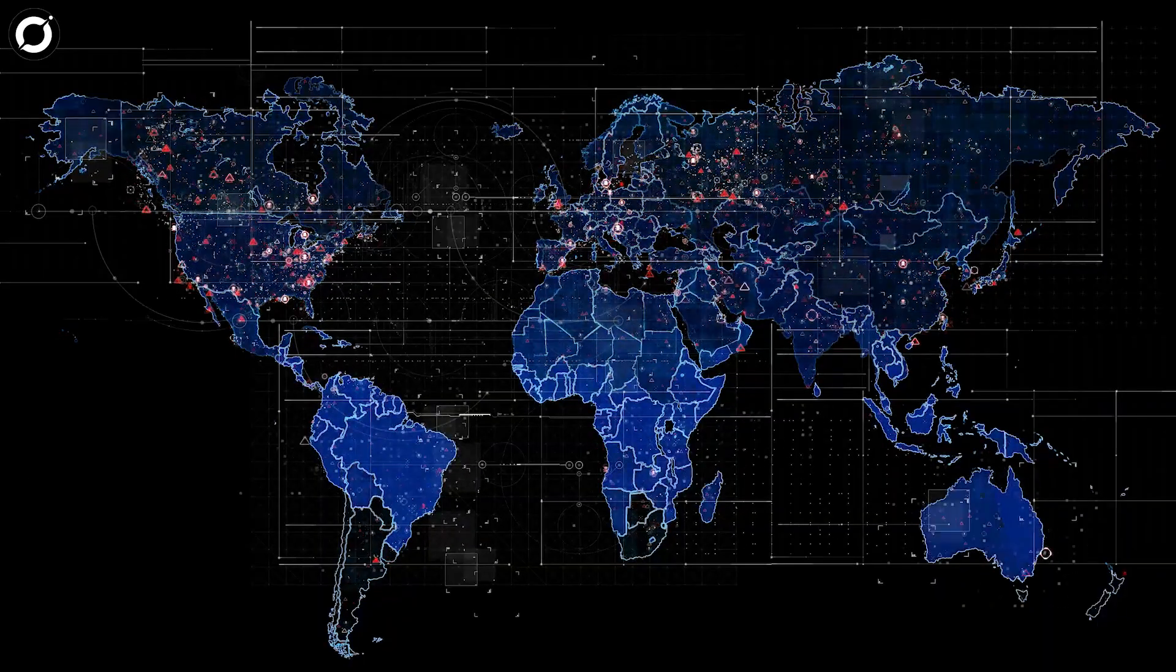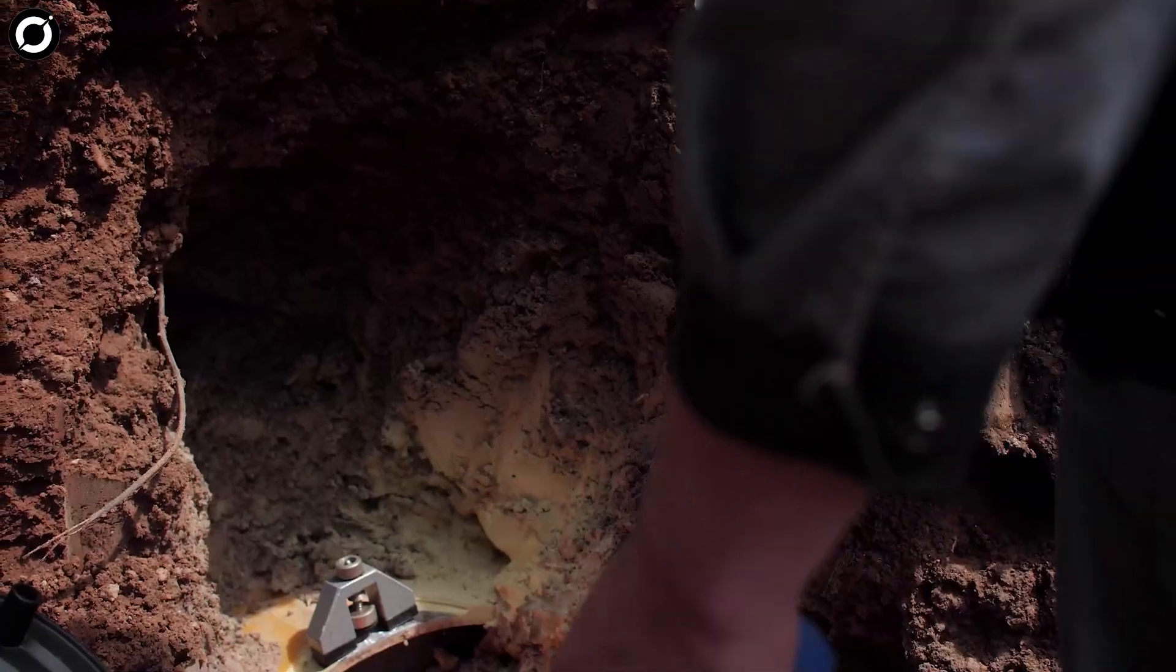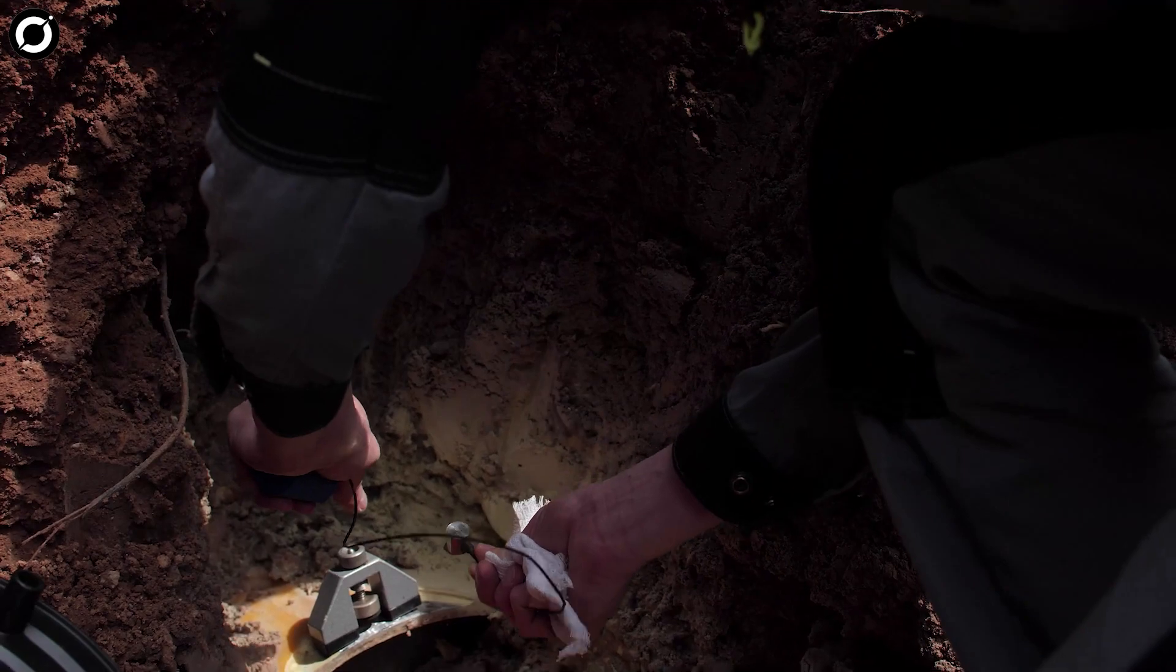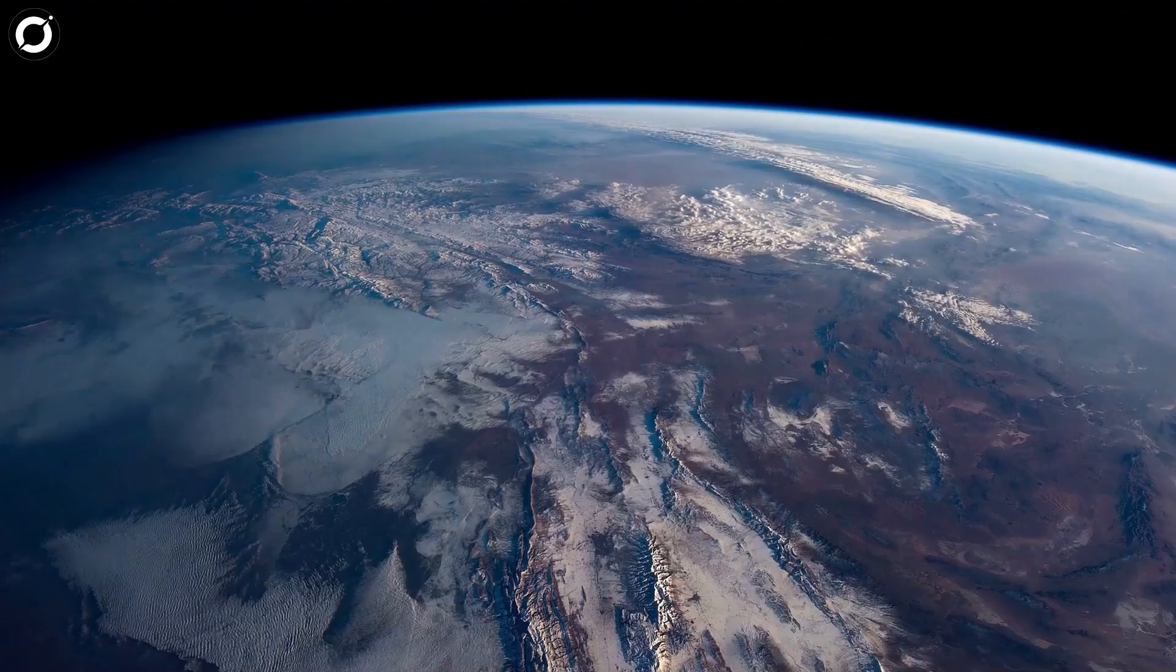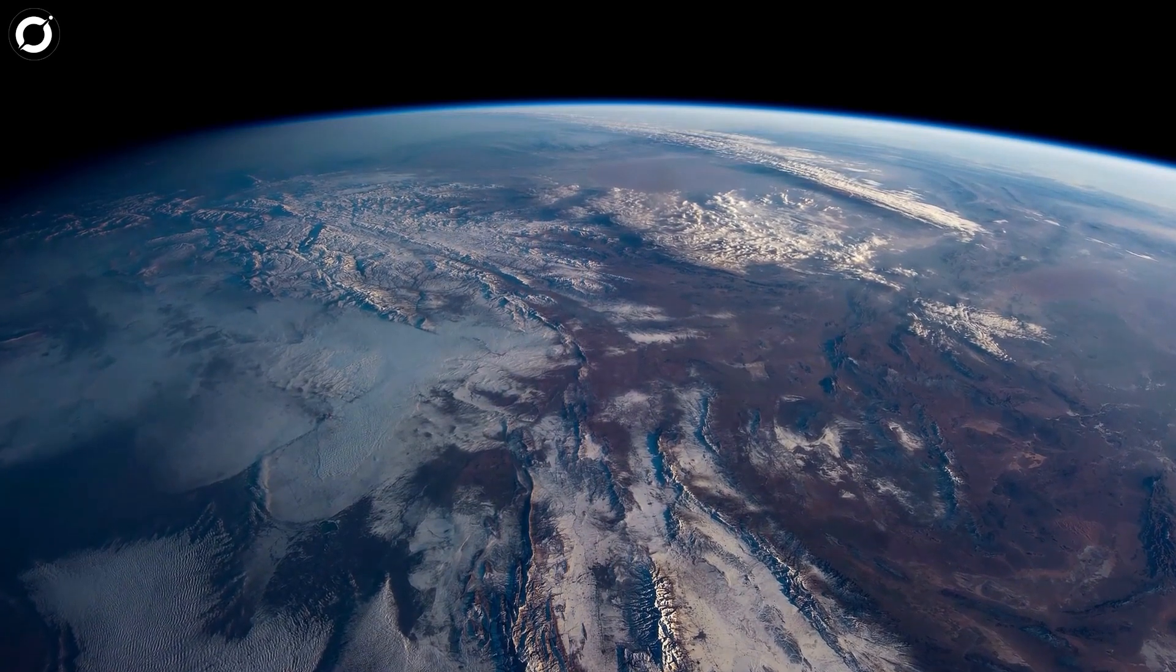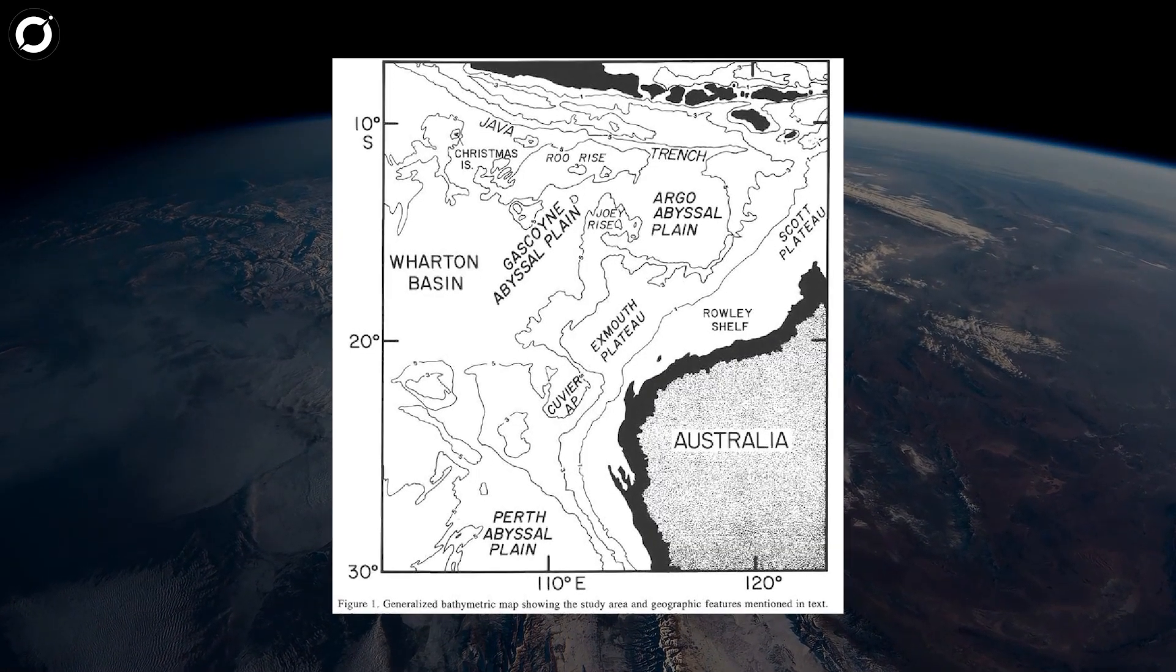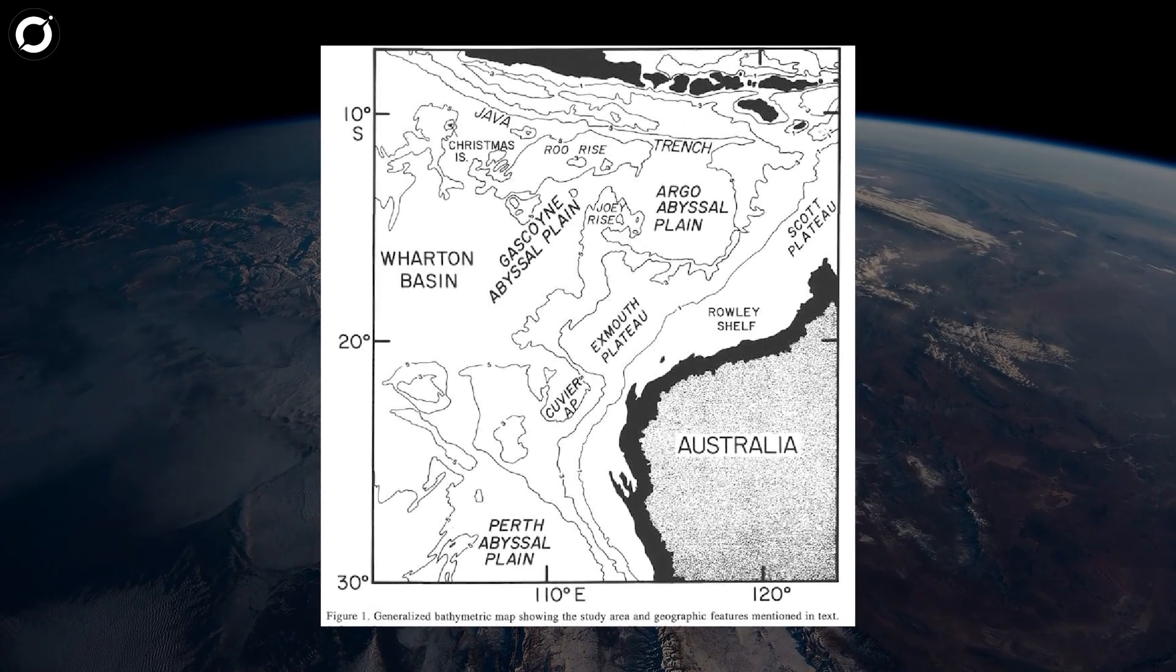For ages, the story of this lost continent had puzzled scientists, leaving them to ponder the mysterious fate of its scattered remnants. The journey to unravel the secrets of Argoland began with intriguing geological clues found in the depths of the Argo abyssal plain, located off the northwest coast of Australia.